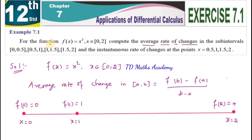Example 7.1: For the function f of x equal to x squared, x element of 0 to 2, compute the average rate of changes in the sub-intervals [0, 0.5], [0.5, 1], [1, 1.5], and [1.5, 2]. The average rate of changes — you need to understand what to do.